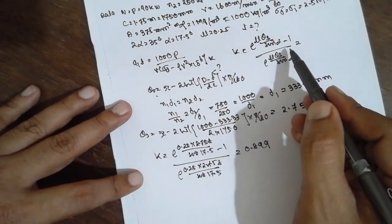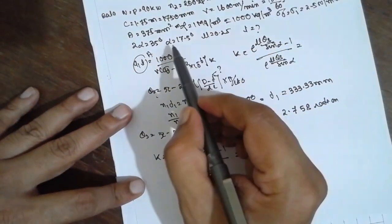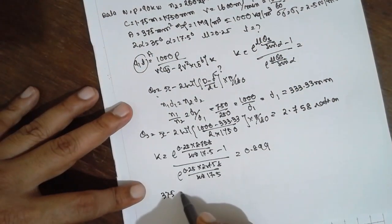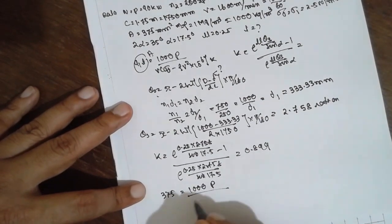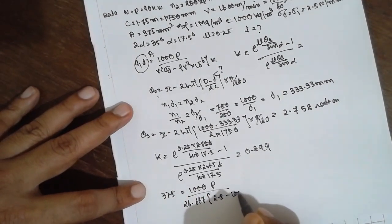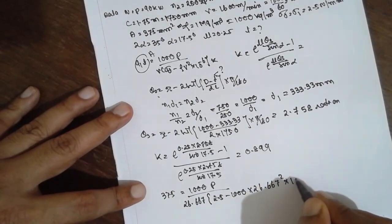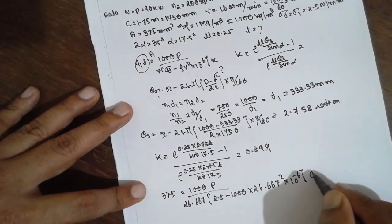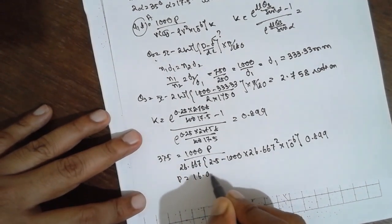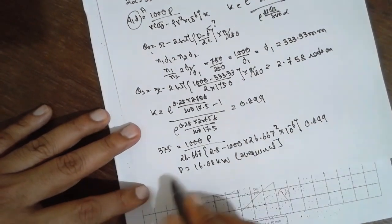After getting this one, substitute in this equation. A is already given here, 375 is equal to 1000 p divided by 26.667 times (2.5 minus 1000 into 26.667 whole square into 10 raised to minus 6) into k (0.899). The answer will be p is equal to 16.80 kW. This is the required one.